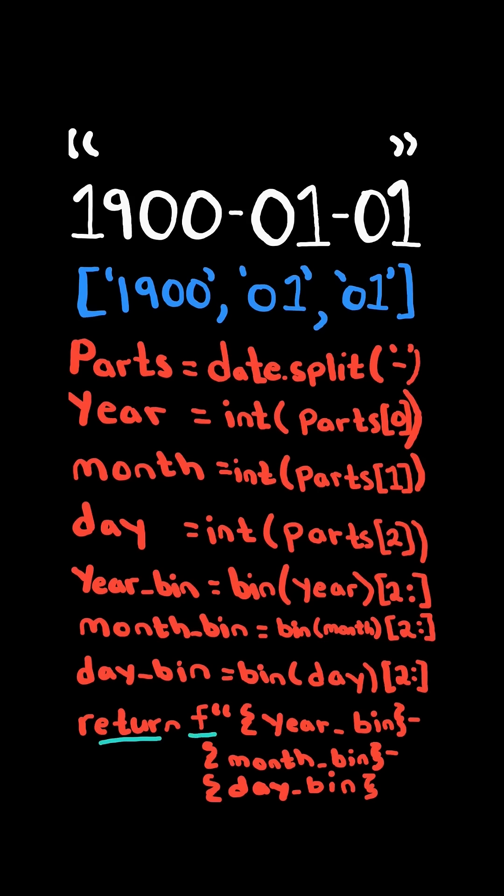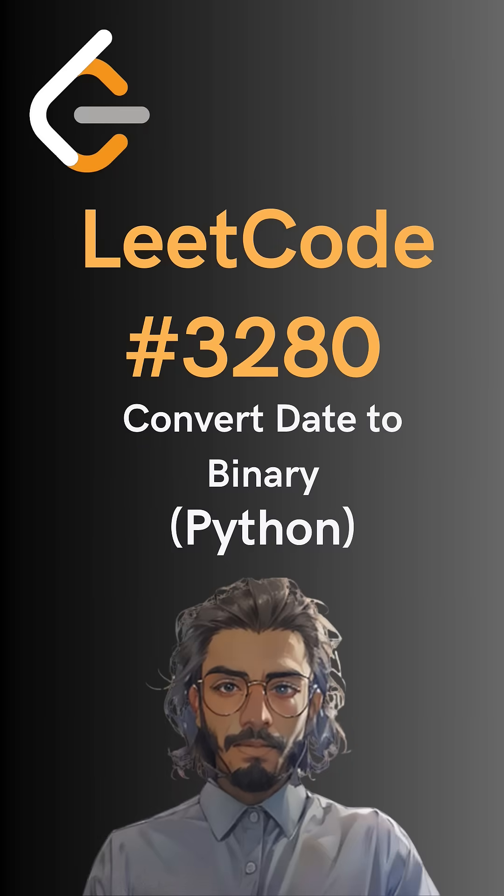At the end, we will return a formatted string with the binary components and the hyphen. And here's the code to do so. Please like and follow for more.